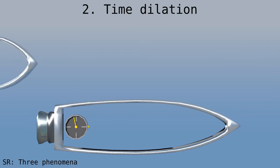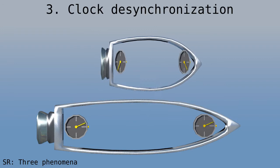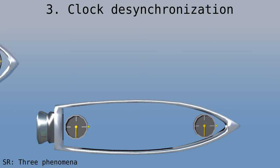The third phenomenon is desynchronization. This means that a clock farther ahead, in the direction of motion, will run behind clocks farther behind. You can see that this is the case for the moving clocks, but not on the spaceship at rest.